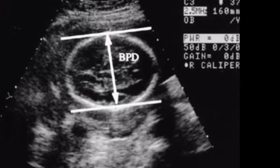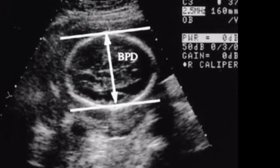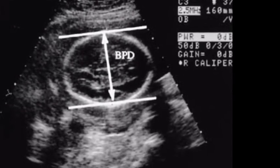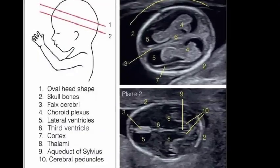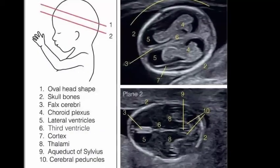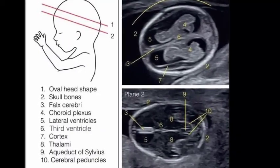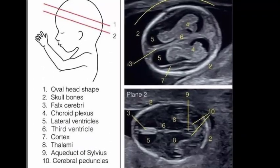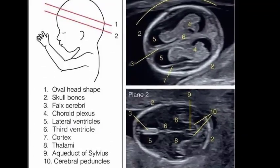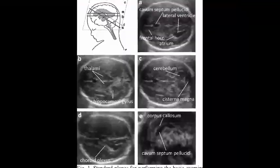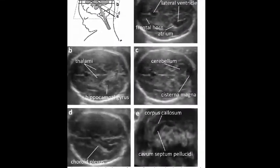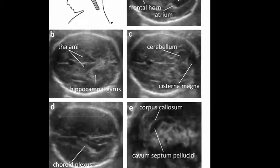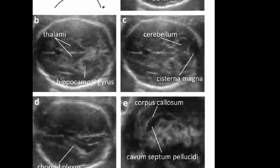The measurement is taken at the level of a plane defined by the following intracerebral landmarks: (1) the frontal horns of the lateral ventricle and cavum septum pellucidum anteriorly; (2) the thalami and third ventricle centrally; and (3) the occipital horns of the cerebral ventricle, cisterna venae magnae cerebri, and insula posteriorly.